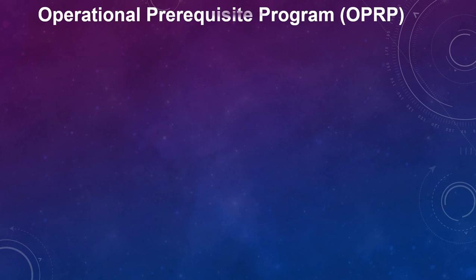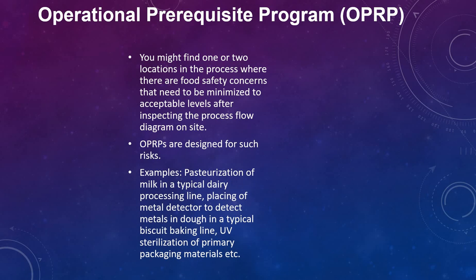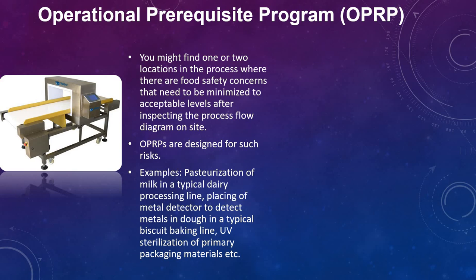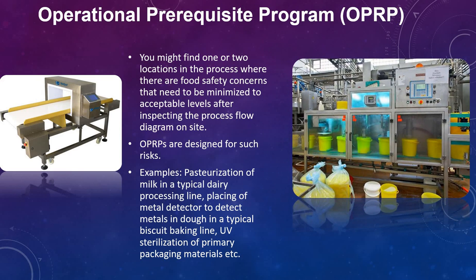The next one is OPRP, which is abbreviated as Operational Prerequisite Program. While observing the processing line, you will find one or two locations in the process where there are food safety concerns that need to be minimized to acceptable levels. OPRPs are designed for such risks. For example: pasteurization of milk in a typical dairy processing line, placement of a metal detector to detect metal in the dough in a typical biscuit baking line, and UV light placed just before primary packaging to sterilize the primary packing material before packing of the product.